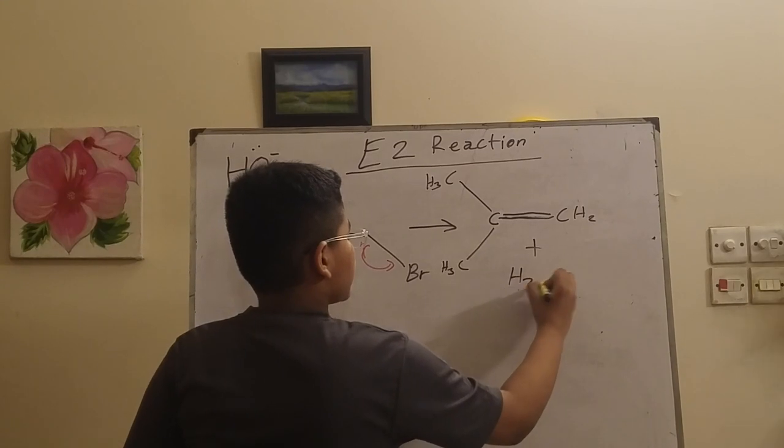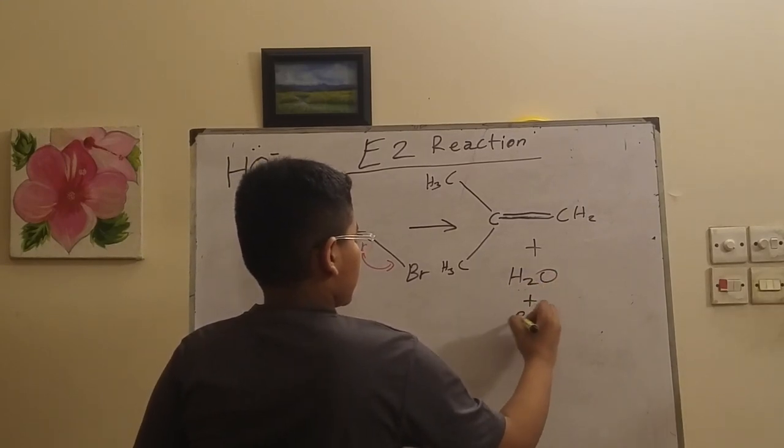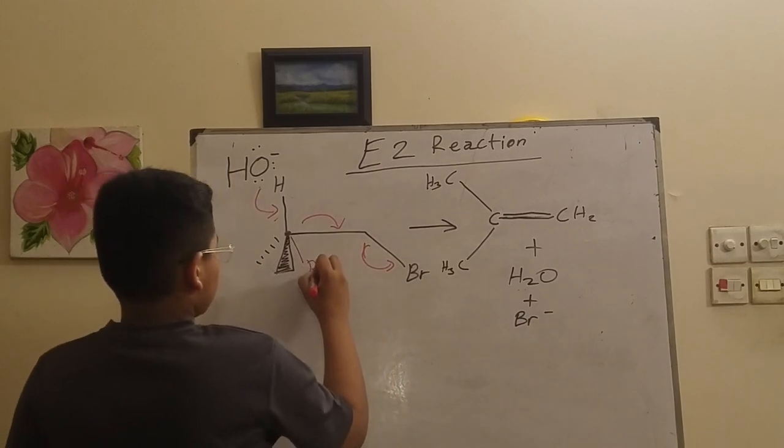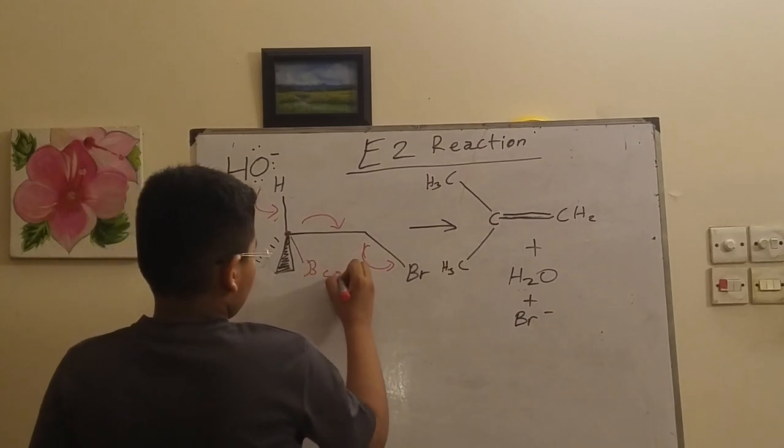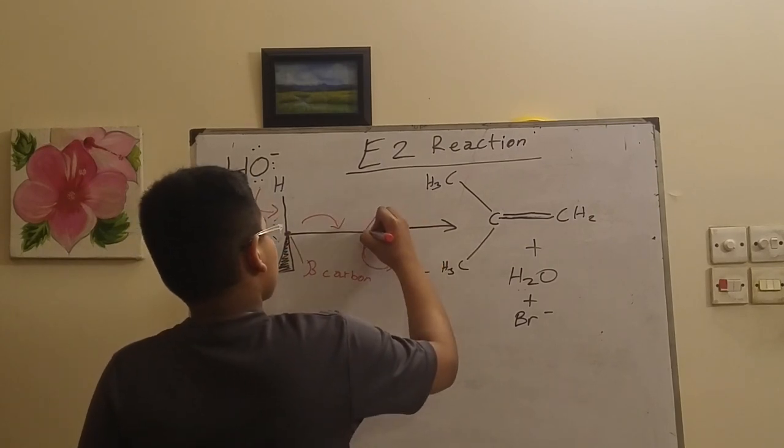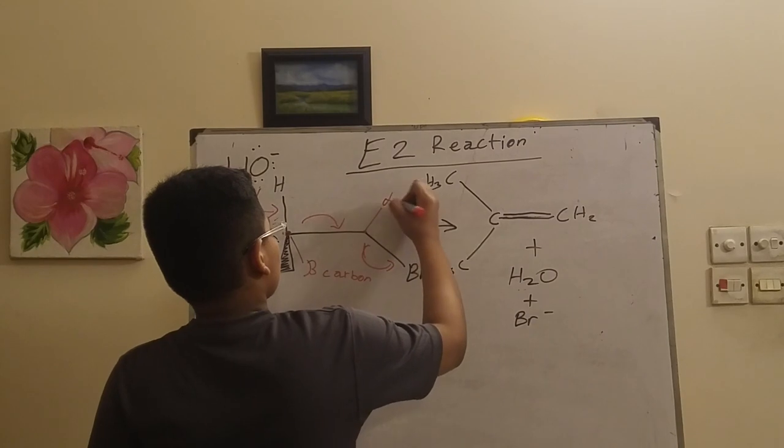A very important thing to know: alpha carbons are the carbon that is connected to the leaving group. In this example, that would be the carbon attached to the bromide. The beta carbon is any carbon connected to the alpha carbon.